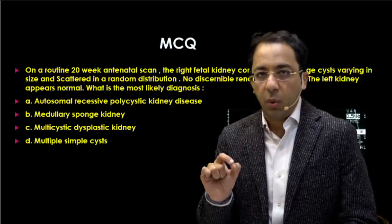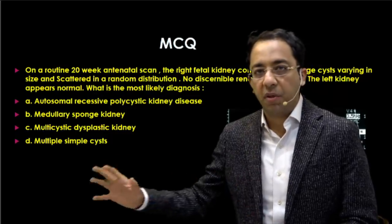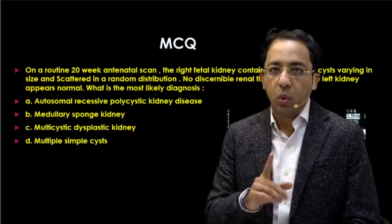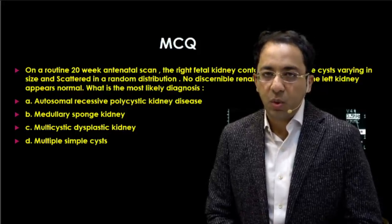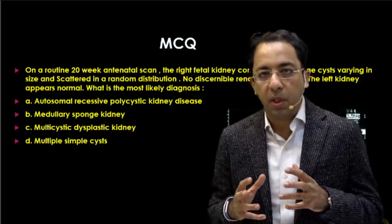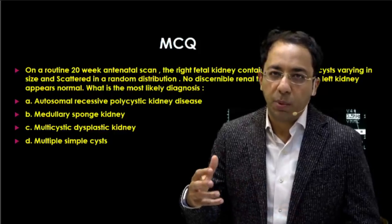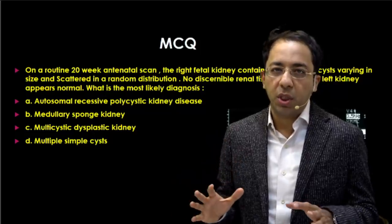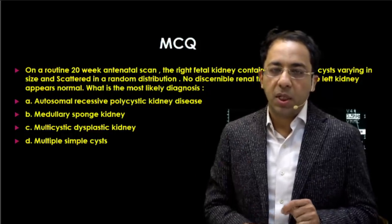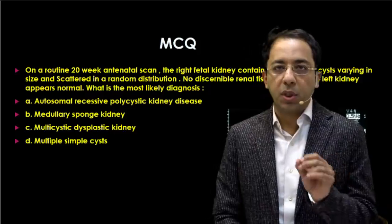The first key point is we are looking at an antenatal ultrasound diagnosis. The second key point is this involves one kidney while the other is normal — that rules out ARPCKD. Autosomal recessive polycystic kidney disease is a bilateral disorder. On antenatal ultrasound, both kidneys appear diffusely echogenic with cysts too small for ultrasound to discern individually, showing only enlarged echogenic kidneys with oligohydramnios. So ARPCKD is ruled out here.